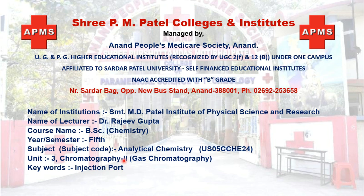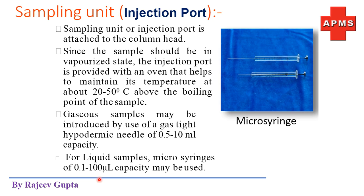In this lecture, I am going to talk about injection ports, which are used to inject our known or unknown sample into the GC instrument. The sampling unit or injection port is attached to the column head — just ahead of the column — where the actual separation of components starts. At this starting point, the injection port is attached, and we inject our sample using syringes.